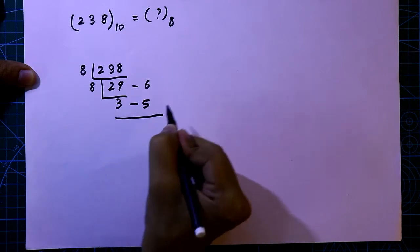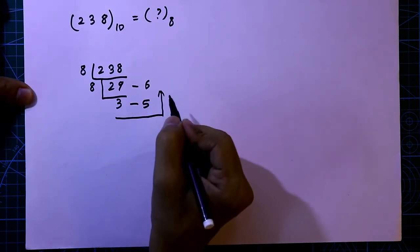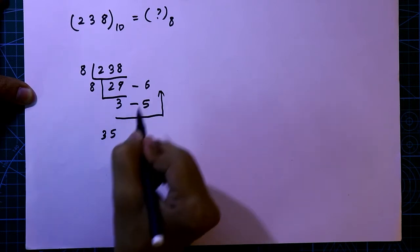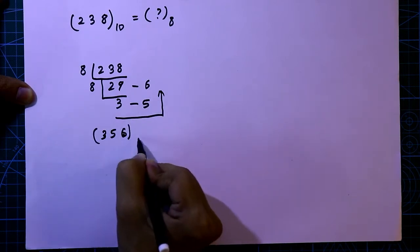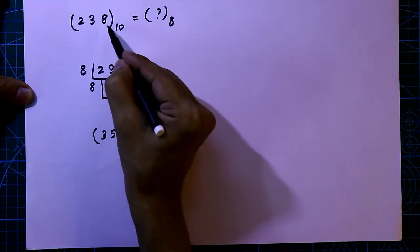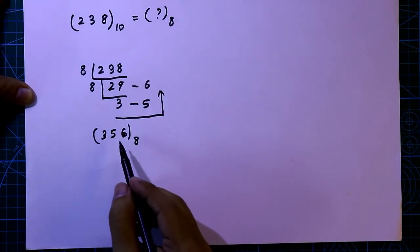Now we have to see in this direction, it is 3, 5, 6. So this is the octal equivalent of 238, it is 356.